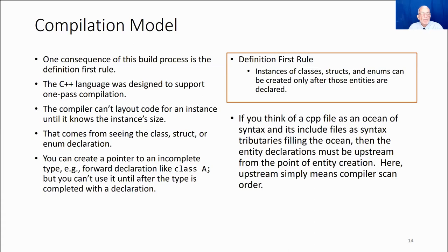So you can create a pointer to an incomplete type. So maybe we've made a forward declaration like class A semicolon. So this just tells the compiler A is a name of a class, but it's not defined yet. So we can make a pointer to that incomplete type, but we can't use it to select or find the contents of that pointer because the contents don't exist yet.